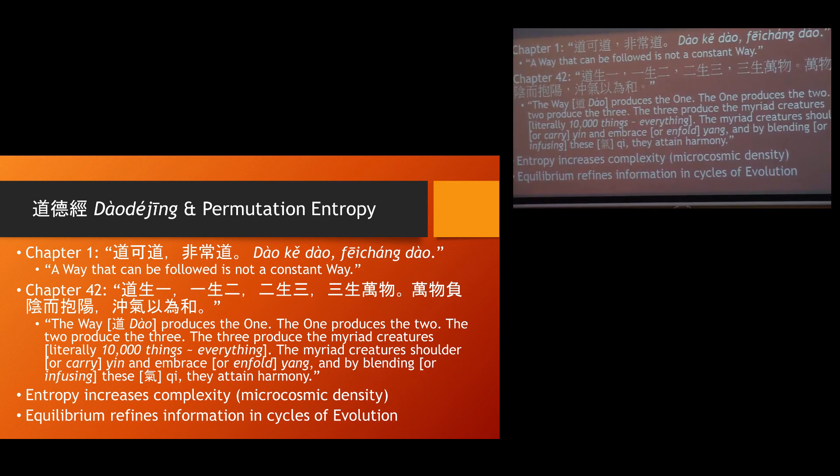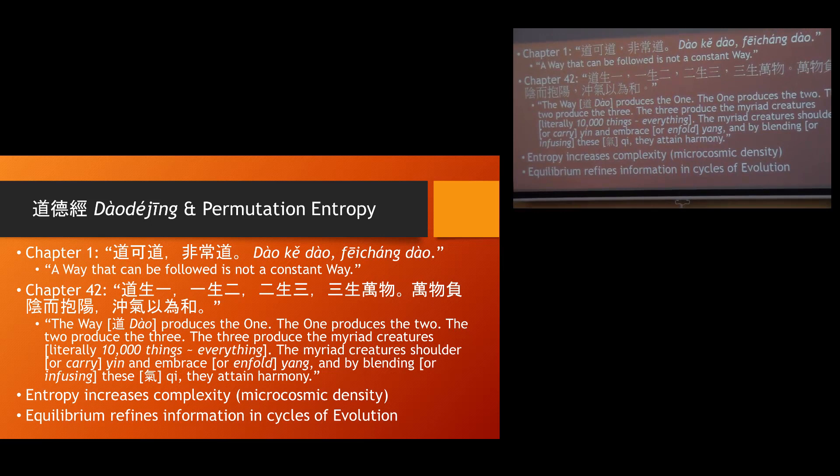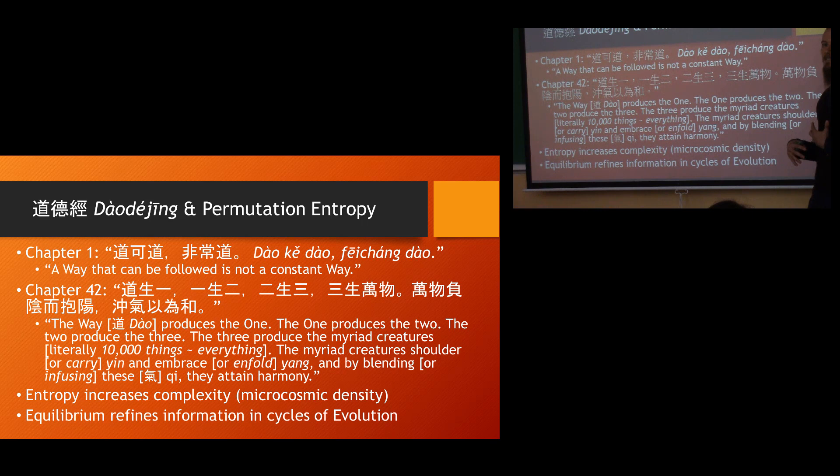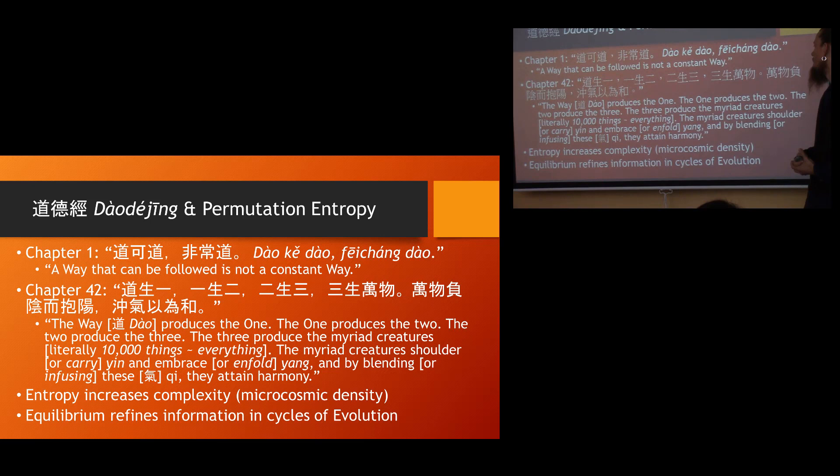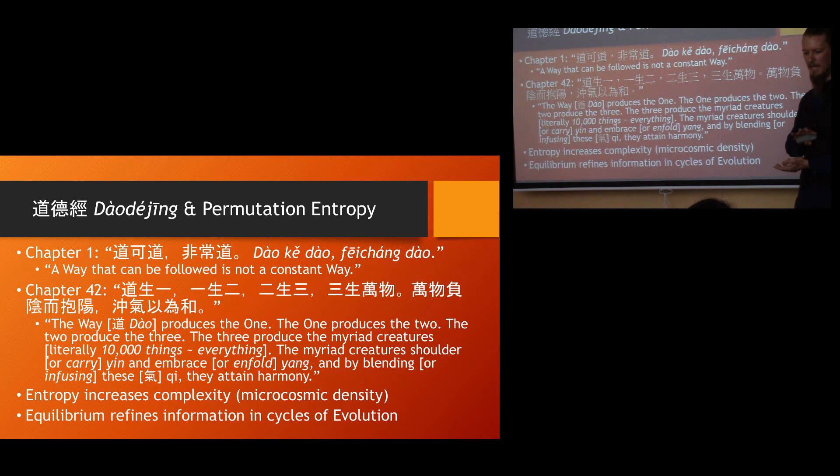So I thought I'd bring the Dao De Jing into it a little bit. These are some of the most famous lines, chapter 1 and chapter 42. A way that can be followed is not a constant way. And this, to me, references an idea that started to come to light in studying this topic, which is that things constantly evolve. And in the sciences and studying information theory and how it's being applied now, the understanding of permutation of information and energy is becoming one of the more focused-on subjects. Because people are trying to understand when we try to transmit information, in what ways does it actually move through the world over time. And this has become the study of permutation entropy, wherein basically as entropy tries to move things toward equilibrium, it causes them to permutate into smaller versions of themselves through fractal geometry.